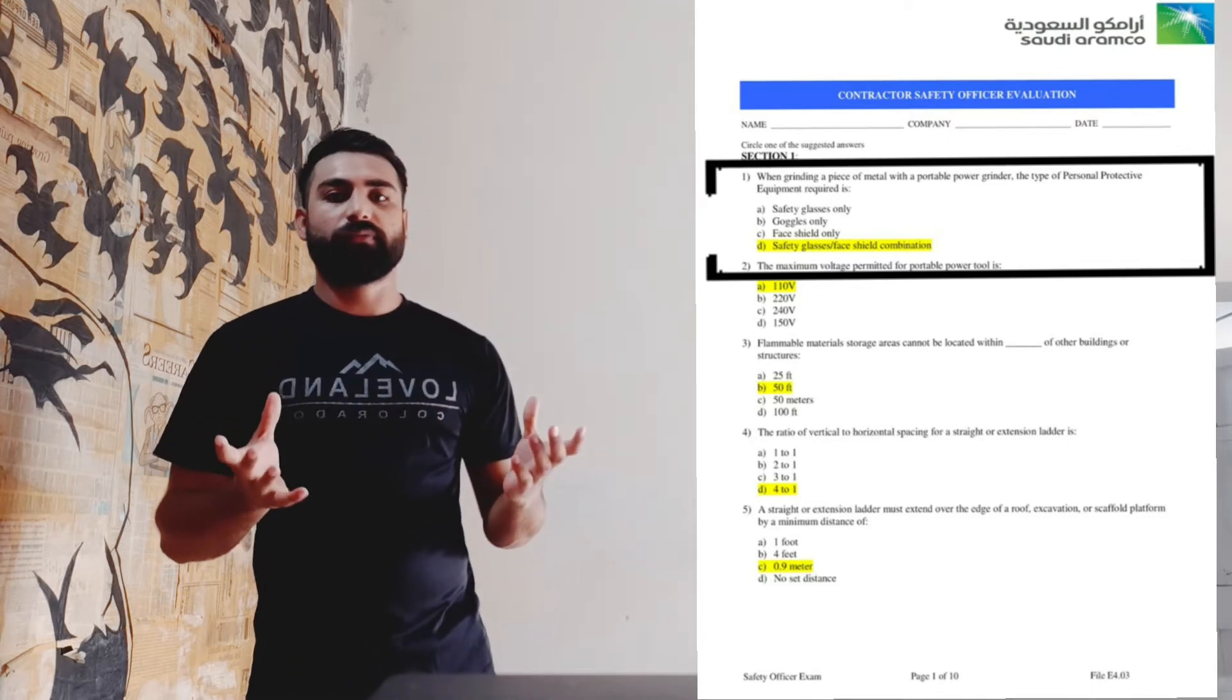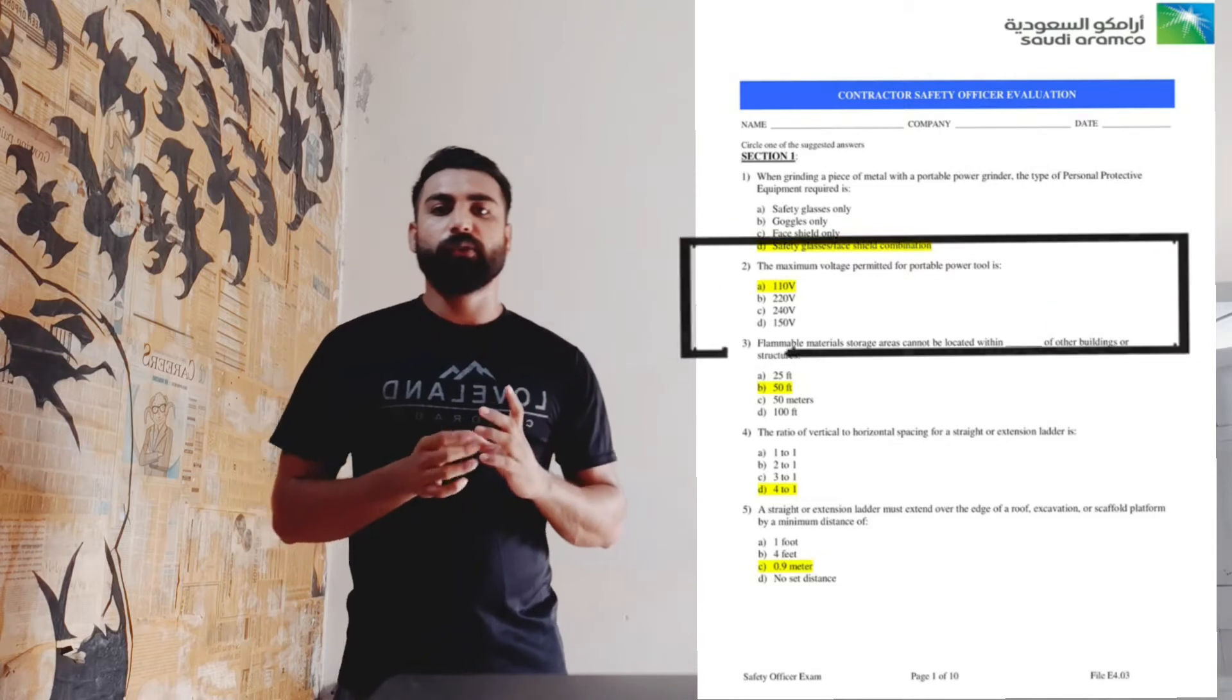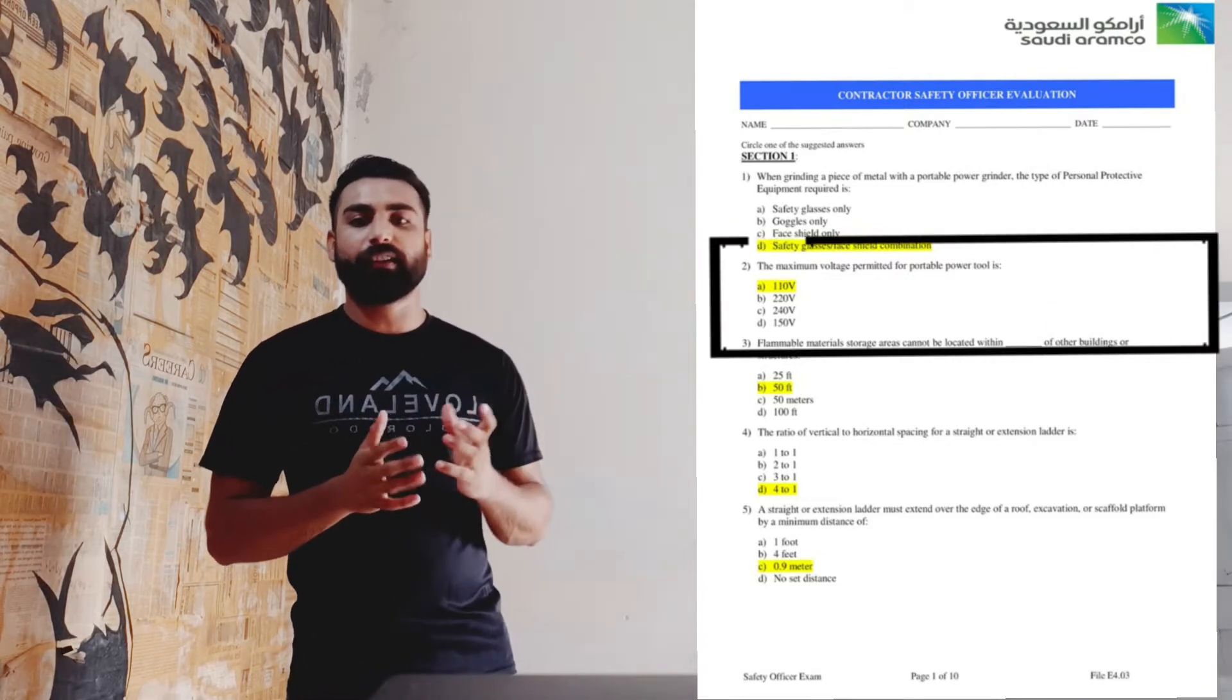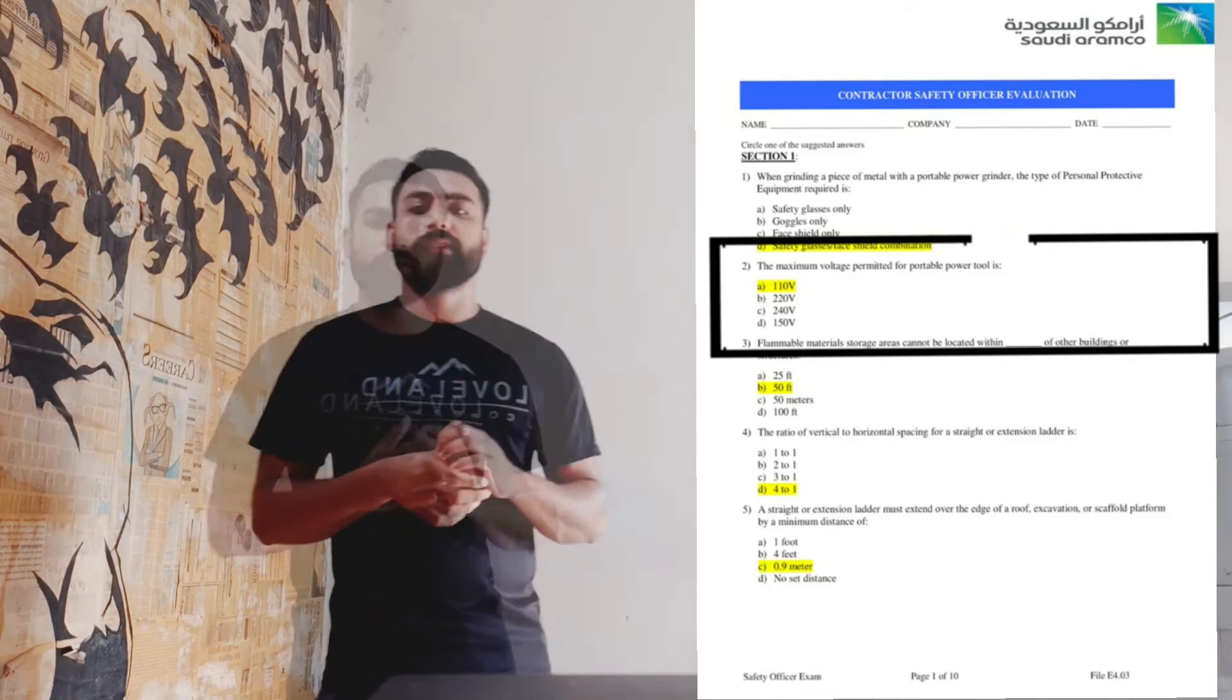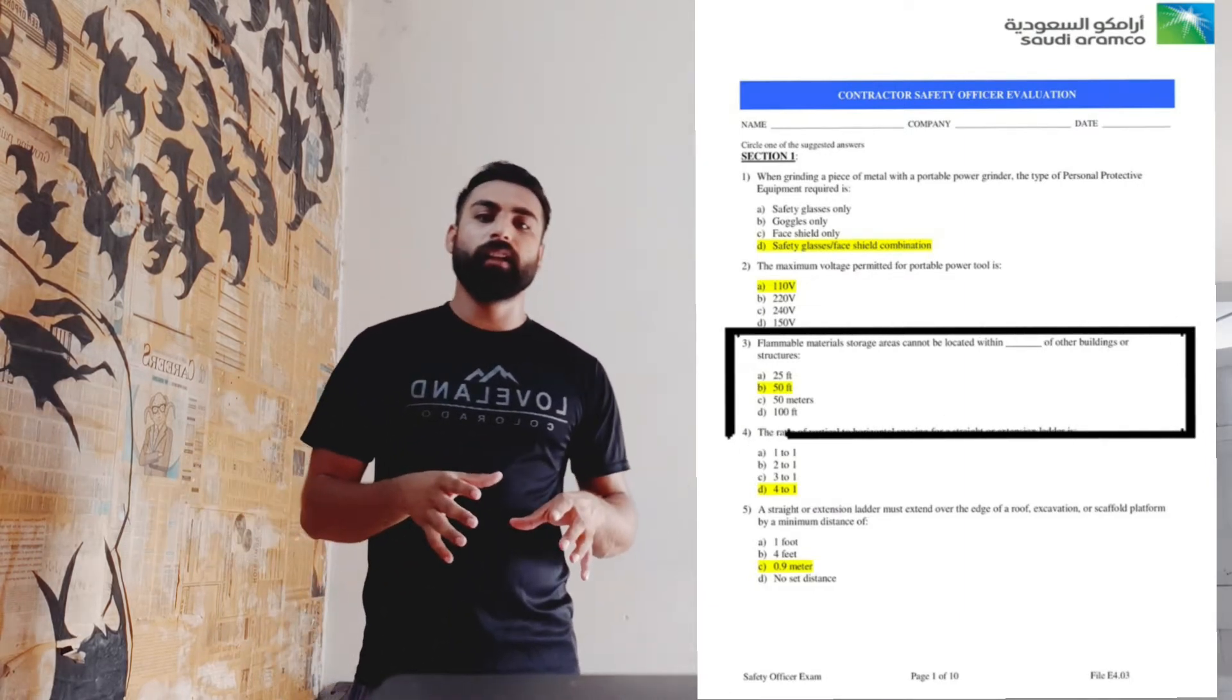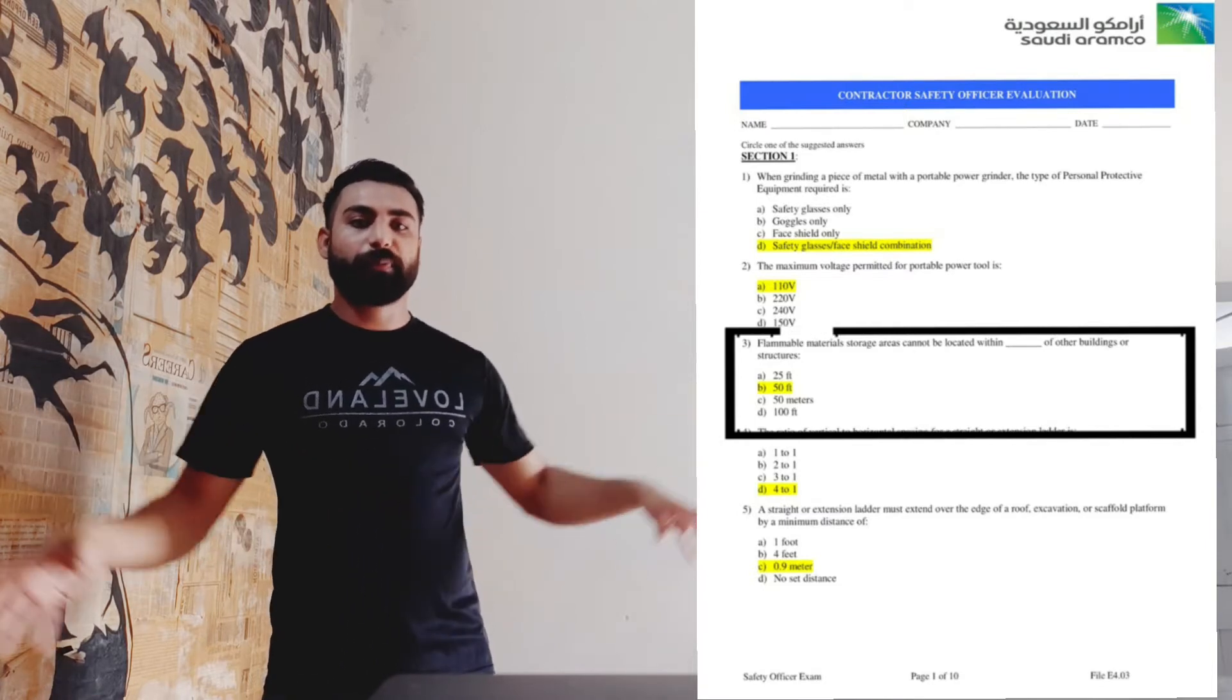Question number two is asking about the voltages for portable electrical tools, which is, as you can see, 110 over 3. Question 3 is asking if we have to store some flammable material like kerosene oil or diesel, how much perimeter we have to make free. It is 50 feet.